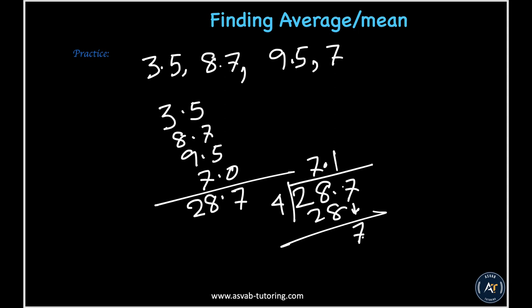4 goes into 7 one time, giving 4. Subtract to get 3. With the decimal, bring down a 0 to get 30. 4 goes into 30 seven times, 7 times 4 is 28. Subtract to get 2, bring down another 0, giving 20. So the answer is 7.175.